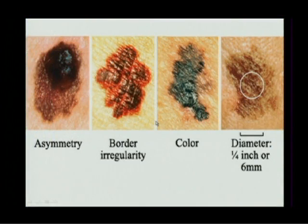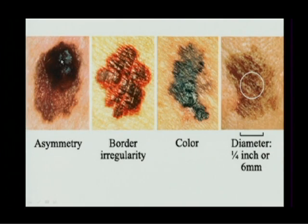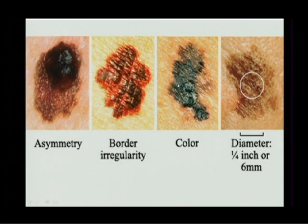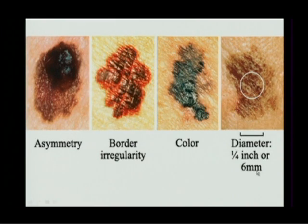When examining skin, look for the ABCDs. Asymmetry — it doesn't look the same on both sides; it may be dark and black on one side, thin and flat on the other. Borders — irregular, not a nice round lesion like typical moles. Color — very dark, can be variegated, ranging from light brown to dark brown to black. Not all melanomas are even pigmented, so if something looks suspicious, it's better to biopsy rather than assume. Diameter — if it's bigger than a pencil eraser head, it should be scrutinized very carefully.